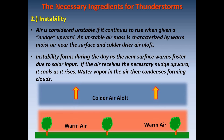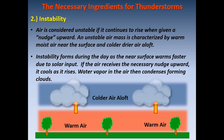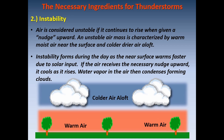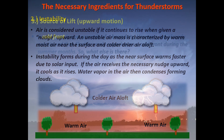Instability forms during the day as the near-surface warms faster due to the sun's input. If the air receives that necessary nudge upward, it cools as it rises. Water vapor in the air will then condense, forming clouds.